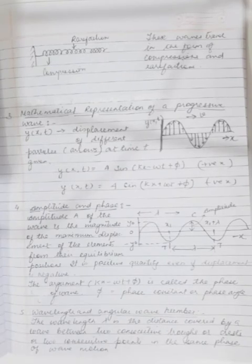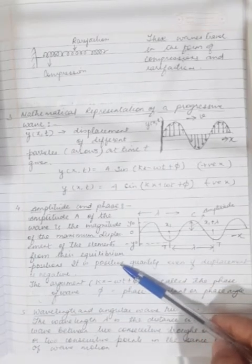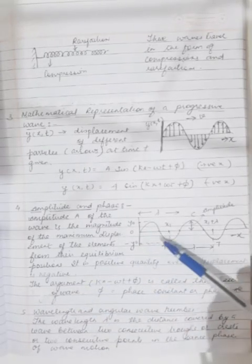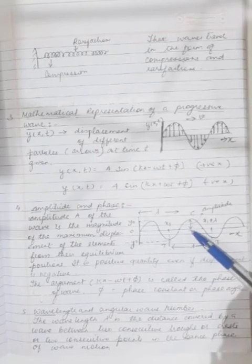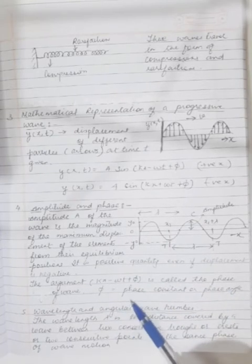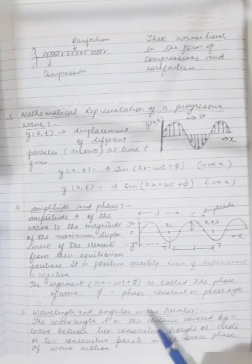Now, amplitude and phase: the amplitude A of the wave is the magnitude of the maximum displacement of the elements from their equilibrium position. It is a positive quantity even if the displacement is negative. The argument (kx − ωt + φ) is called the phase of the wave, and φ is the phase constant or phase angle.